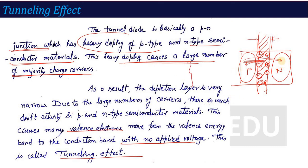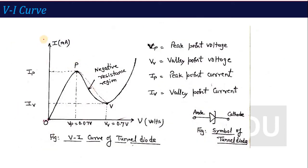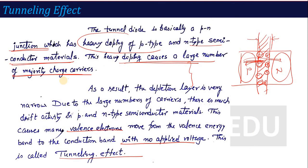That's why we have a higher current without any applied voltage. If we talk about the VI characteristic, without applying voltage — here you can see that at zero voltage the current is already significant. This value shown is 0.07V, which is a very low, nearly negligible voltage. The current is greatly increased due to this tunneling effect because the depletion layer is very narrow, allowing current to flow.